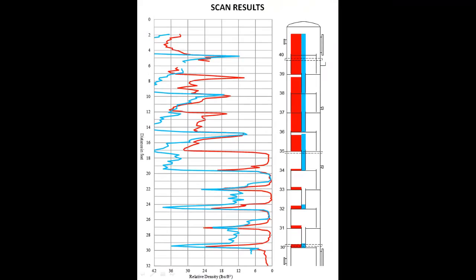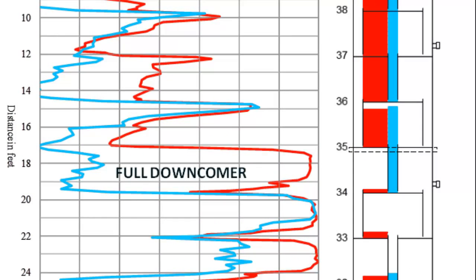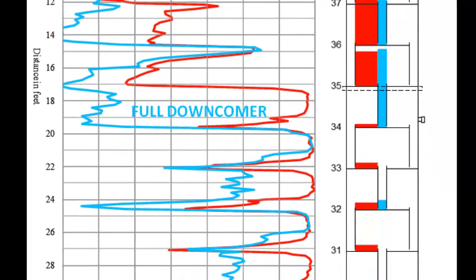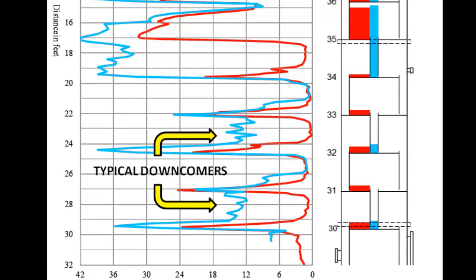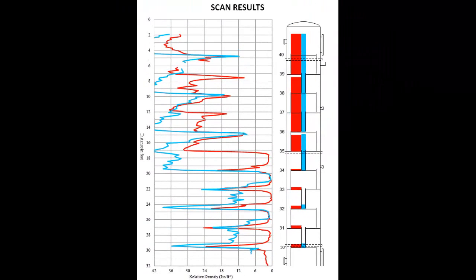This scan shows that the downcomer from tray 35 to 34 is completely full, and it is indeed the location of the restriction. In contrast, the downcomers below tray 35 showed typical liquid loadings. As a result, the downcomer scan verified that there was indeed a restriction in the downcomer causing the flooding in the top of the tower.